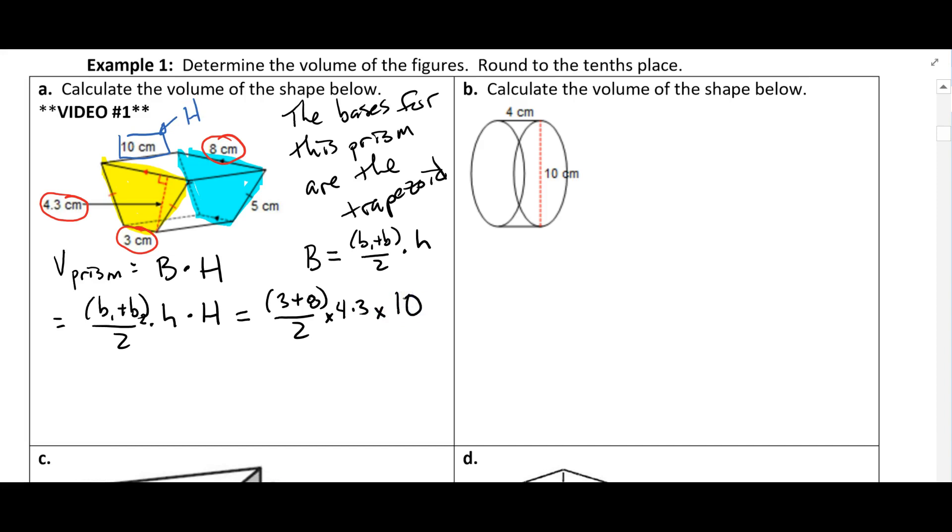All right. So if we multiply all this out, that's going to be 11 divided by 2. So that's 5.5 times 4.3 times 10. And if I did my calculations correctly, we should get 236.5. And my units is centimeters, so that would be centimeters cubed. So if I had little cubes that were 1 centimeter on each side, I could fit 236.5 of these inside of there.